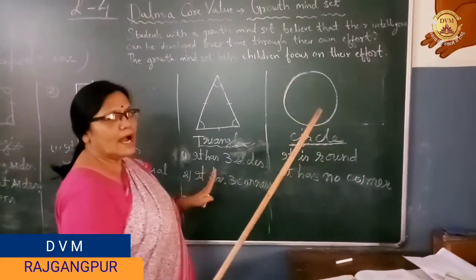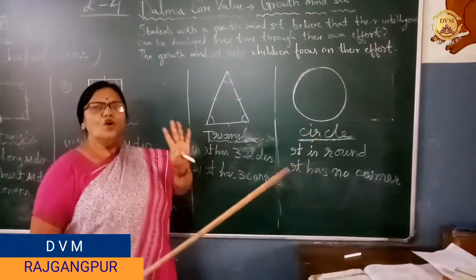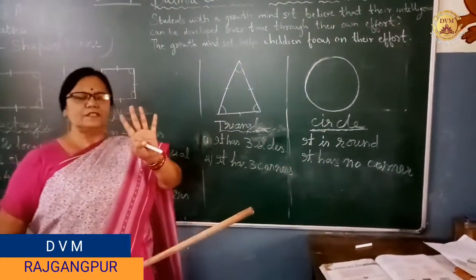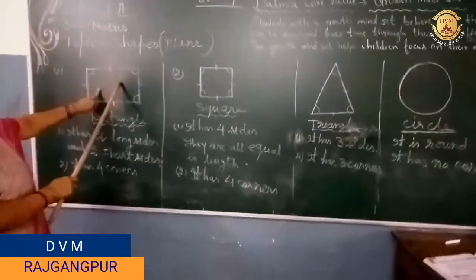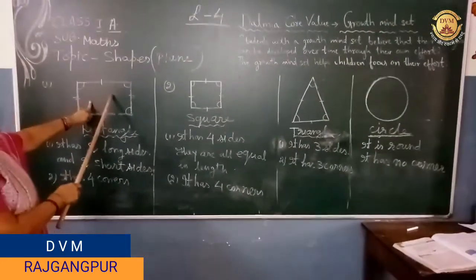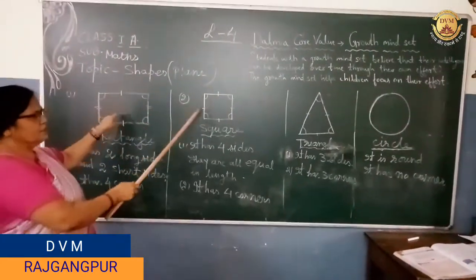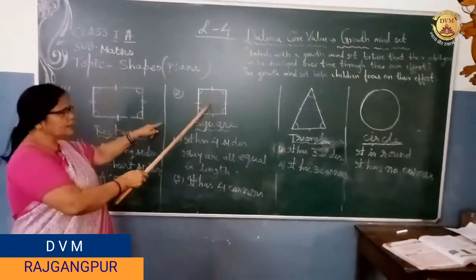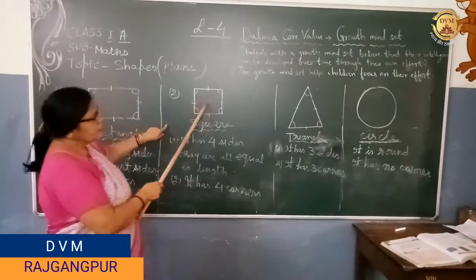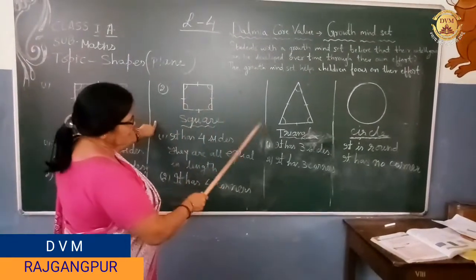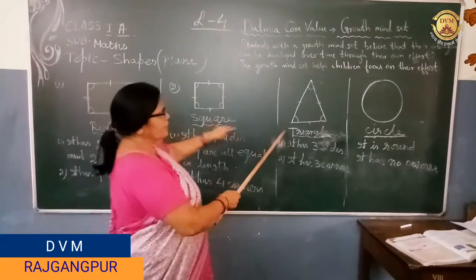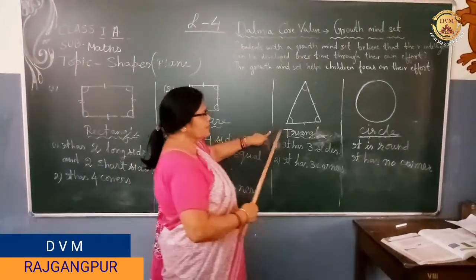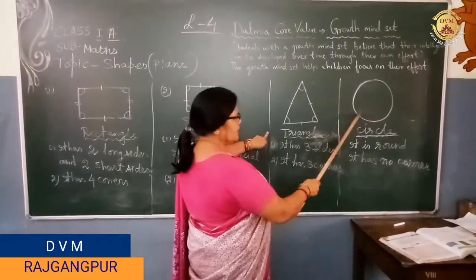So today I taught you 4 shapes children. First one is rectangle, second one is square, third one is triangle, and fourth one is circle.